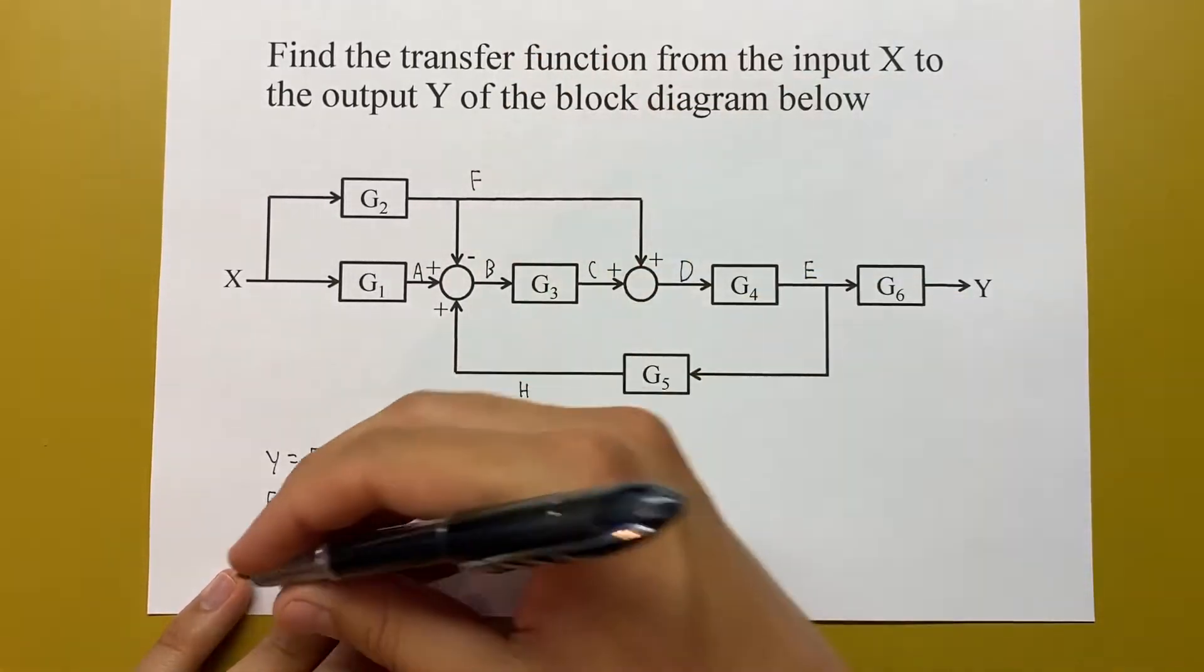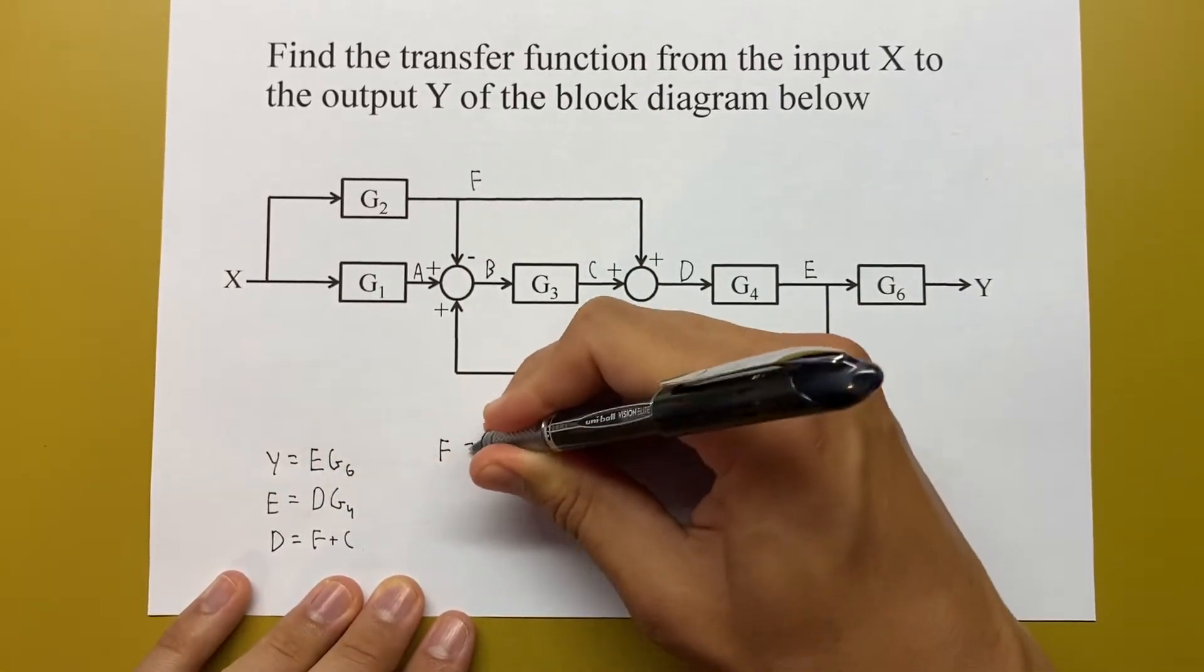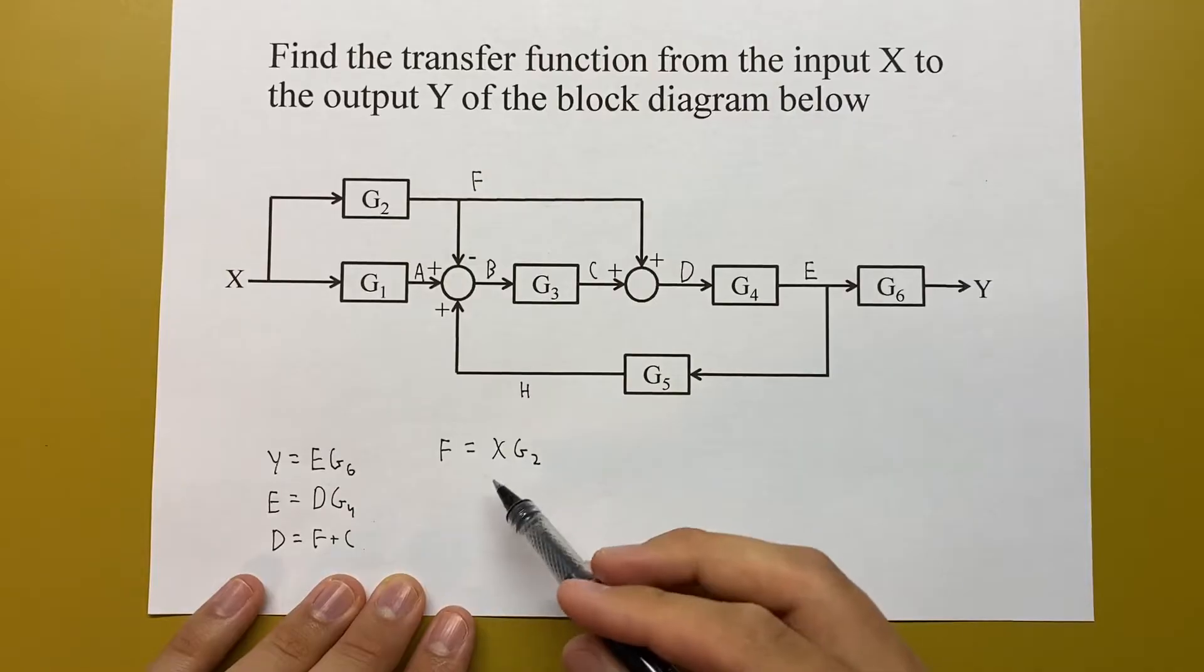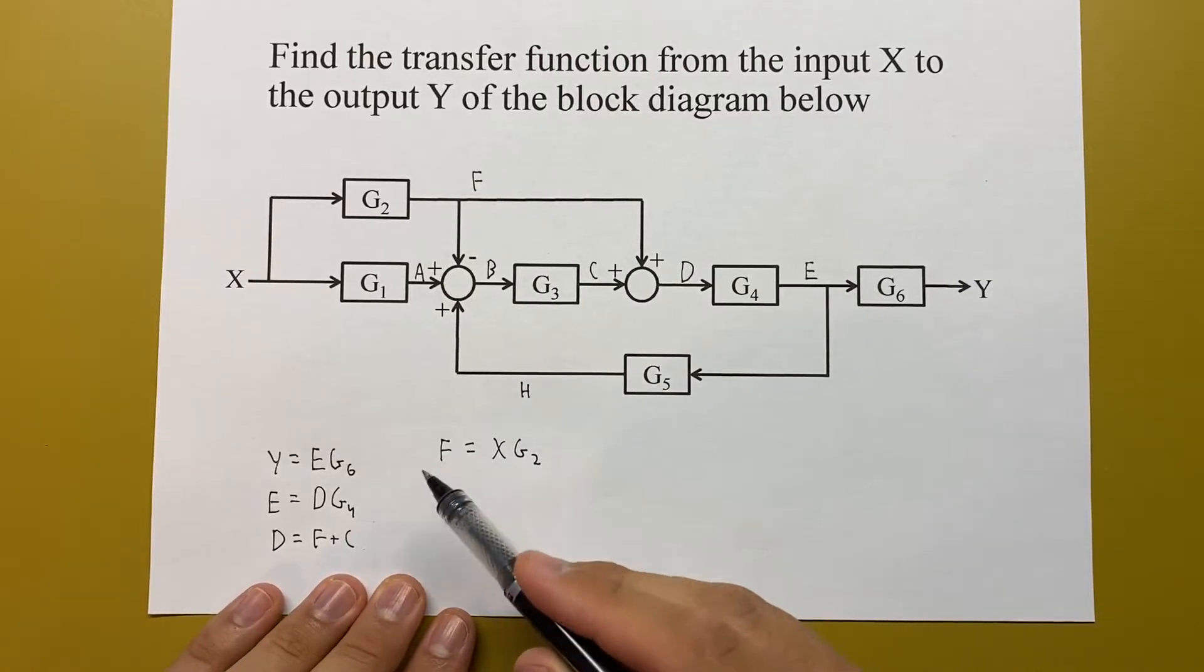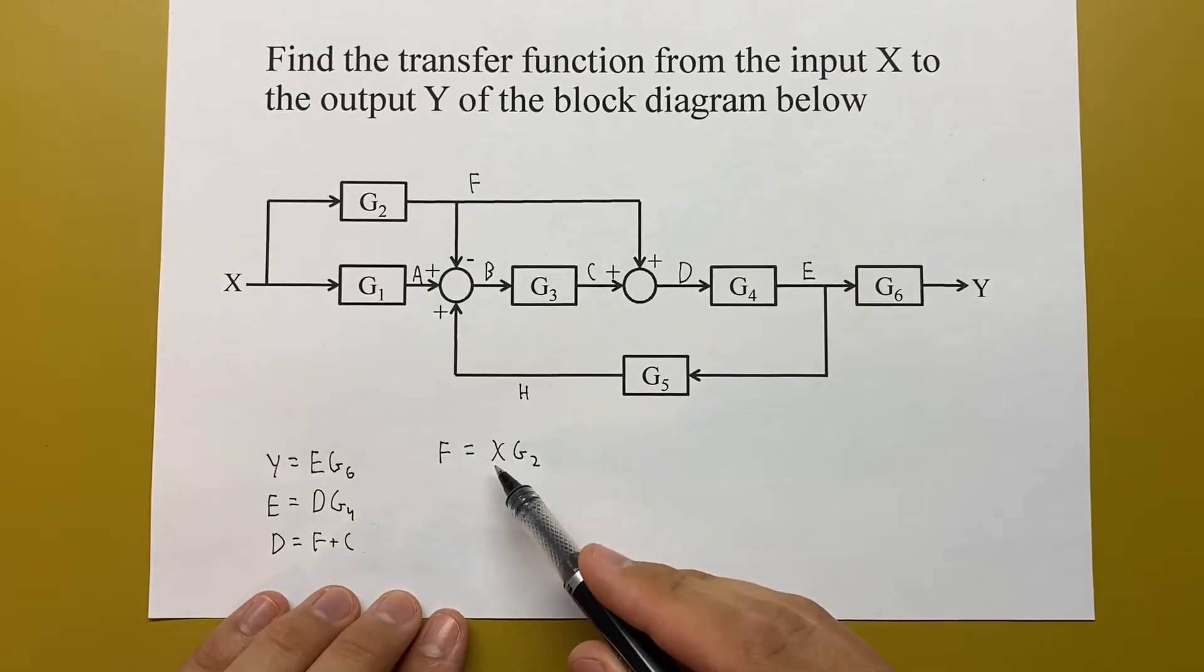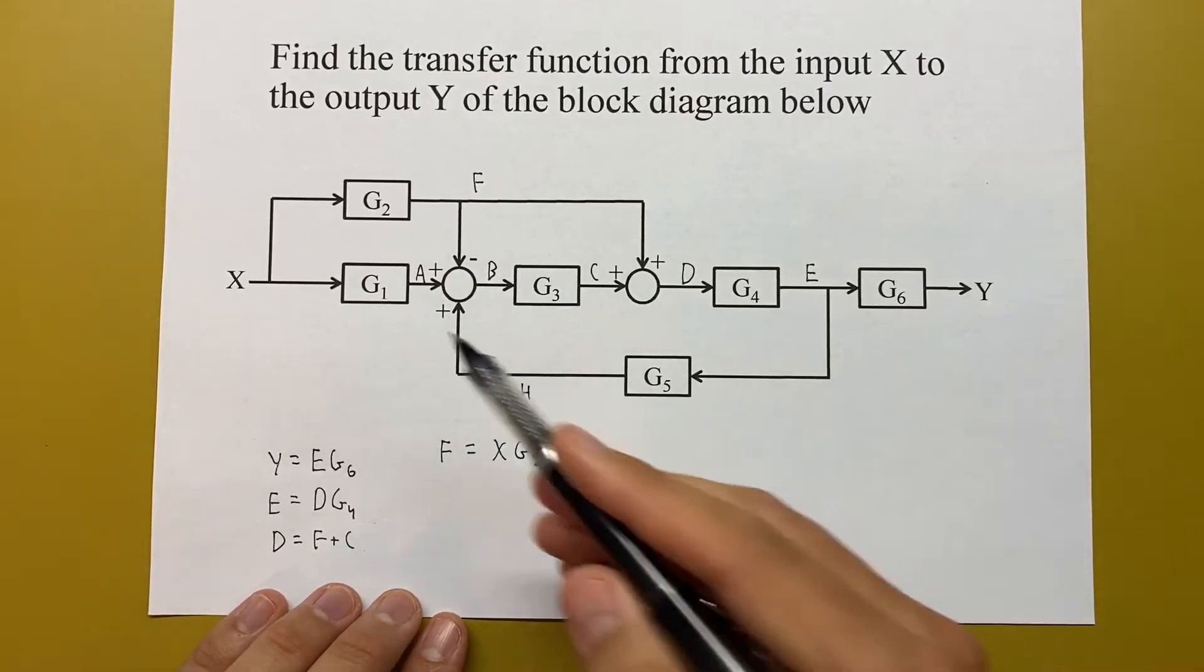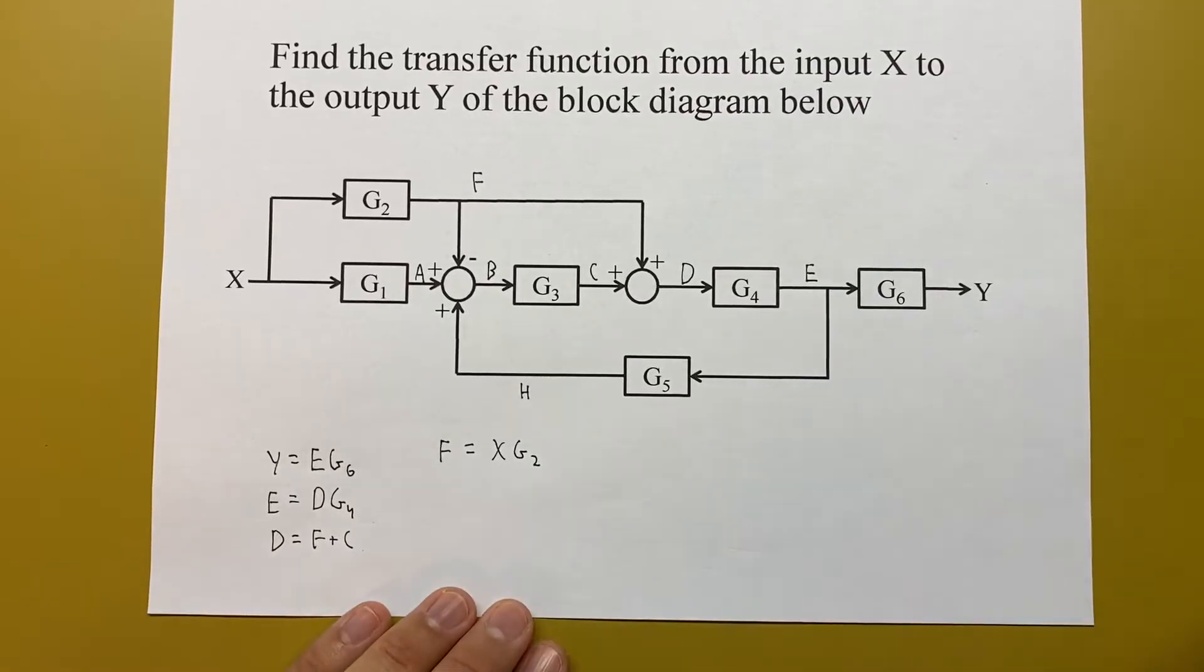I'm just going to do F. F is equal to G2 times X, or X G2. Now we're done with one branch at least, because F is in terms of X. We want to get everything in terms of X, Y, and G so we can find our transfer function, because we don't care about these intermediate signals.